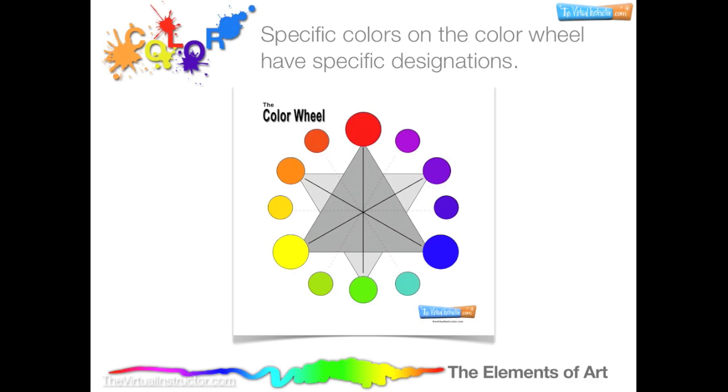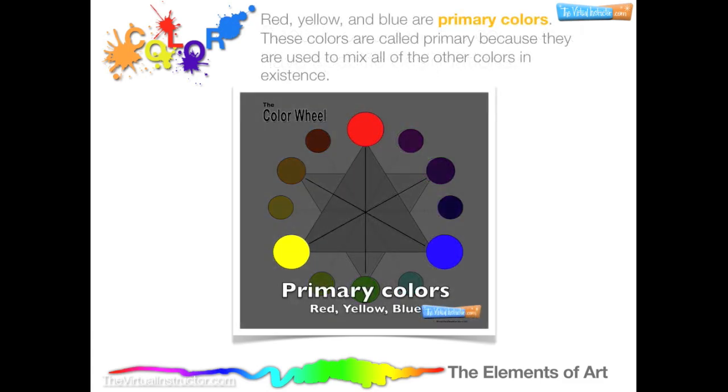Specific colors on the color wheel have specific designations. Red, yellow, and blue are considered primary colors. These colors are called primary because they are used to mix all of the other colors in existence.